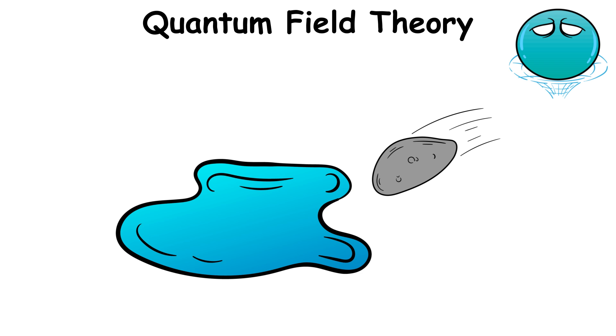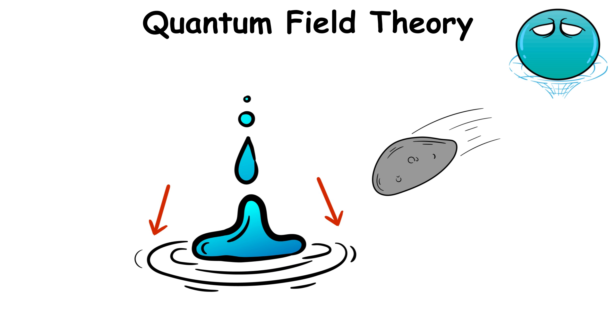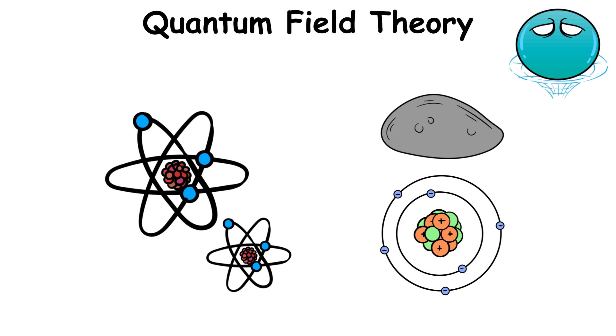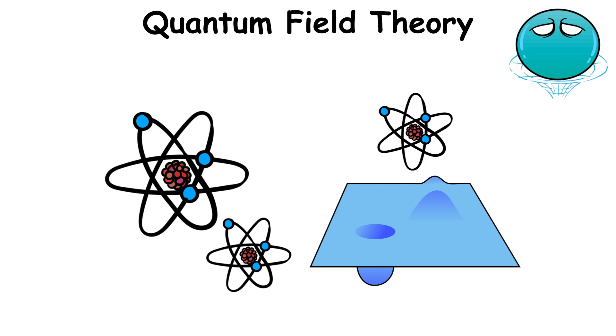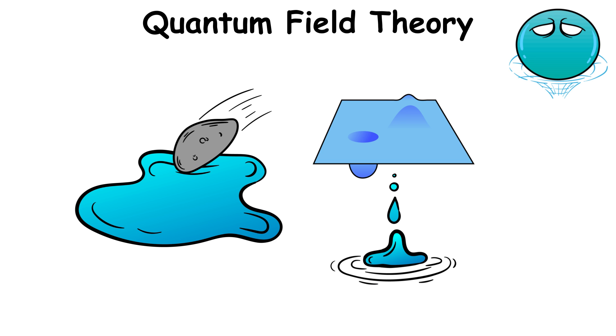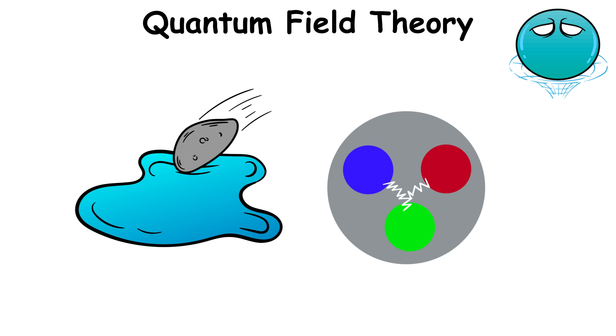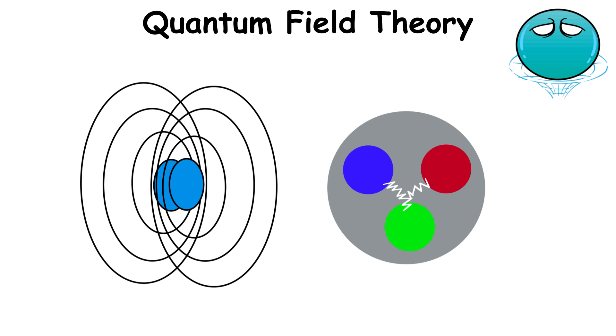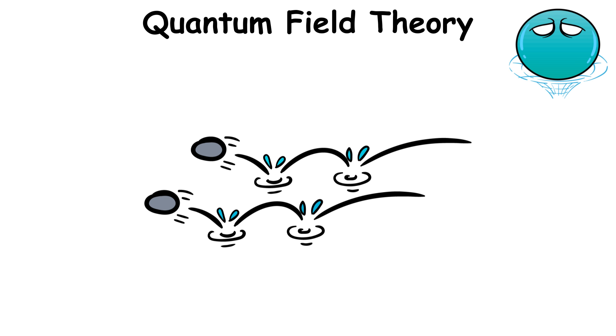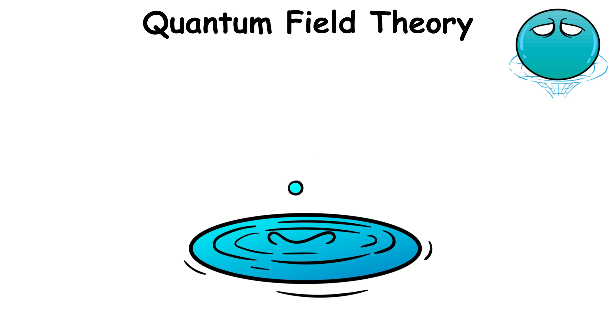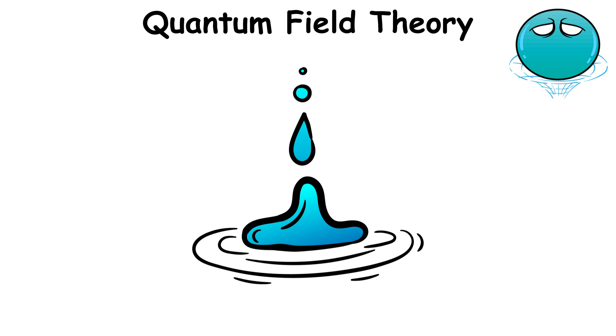That pebble is a particle. Every particle has a quantum field, represented by the ripples created by a pebble thrown into a pond. When these particles interact with one another, the fields interact as well. So if you throw two pebbles into a pond simultaneously and close to one another, you will see their ripples either turning into a wave or canceling each other out.